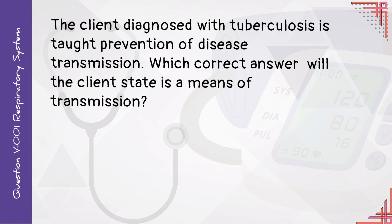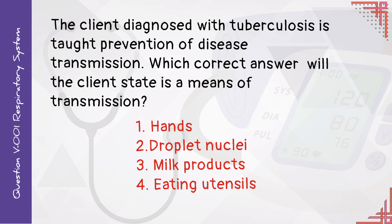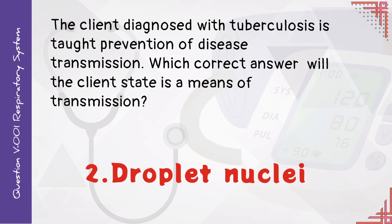A client diagnosed with tuberculosis is taught prevention of disease transmission. What is the correct answer regarding the means of transmission? One: hands. Two: droplet nuclei. Three: milk products. Four: eating utensils. Answer number two: the most frequent means of transmission of the tubercle bacillus is by droplet nuclei. The bacillus is present in the air as a result of coughing, sneezing, and expectorating by infected persons.